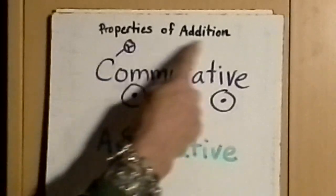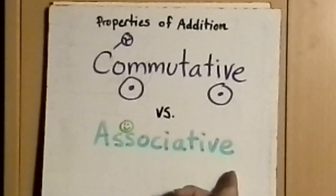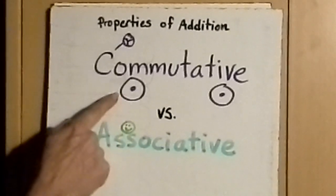The math lesson today is on the properties of addition. The difference between the commutative and the associative properties of addition. You'll notice there's a reason.